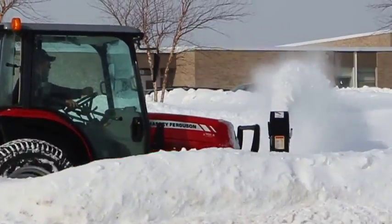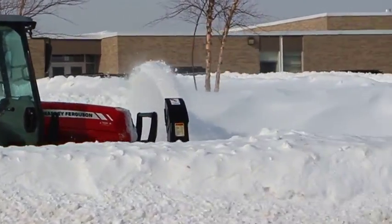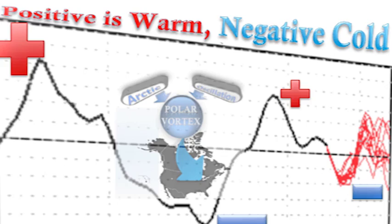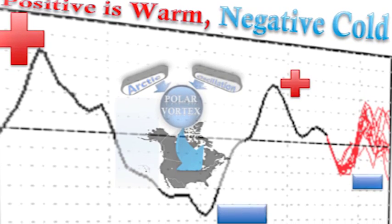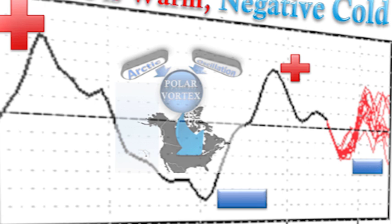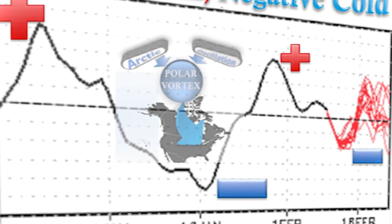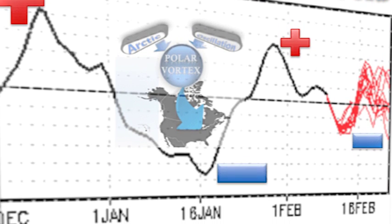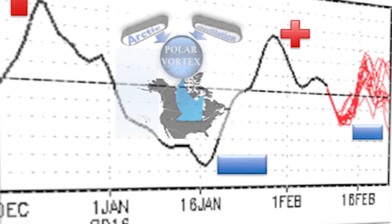So how do we gauge this? The Arctic oscillation goes up and down — it's positive and negative. When it's positive, it usually means warm air in the North American portion of the world, Canada and the United States. When it goes negative, it typically means very cold air in Canada and the United States. You can see on the chart that when it dips down, the pinball machine gets in motion — the flippers kick that cold air and push it down into the United States. Now you know the difference between the Arctic oscillation and the polar vortex.